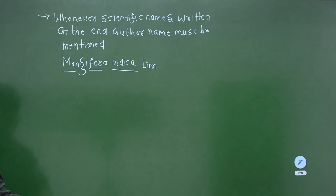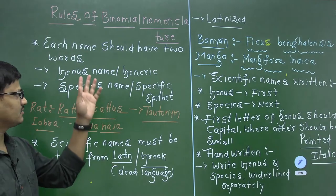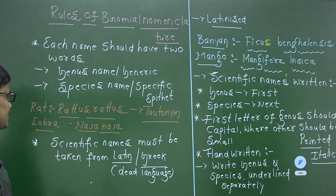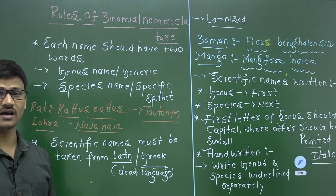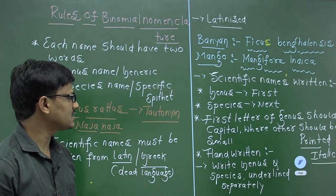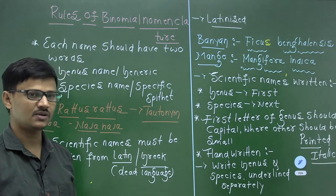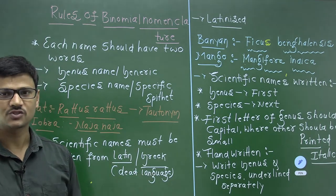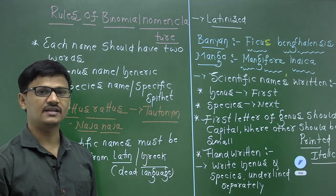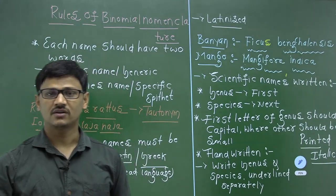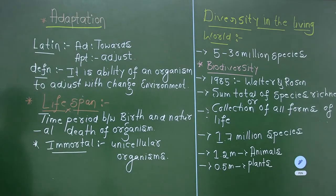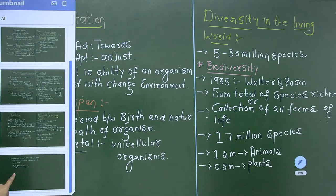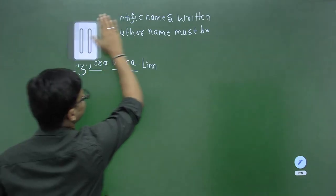These are all the rules of binomial nomenclature: each name contains two words — genus and species; scientific names must be taken from Latin or Greek; if from other languages, they must be Latinized; genus name is written first with a capital first letter; all other letters are small; when printed, names should be in italic; and at the end, the author name should be mentioned in abbreviated form.